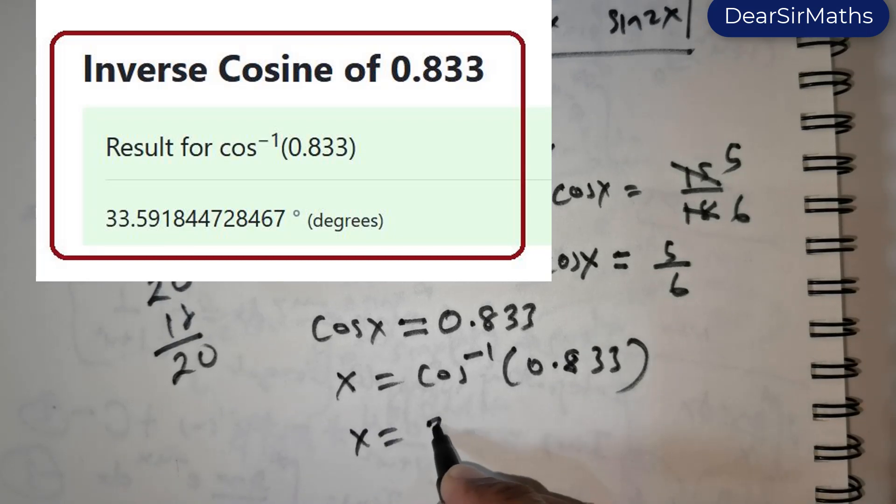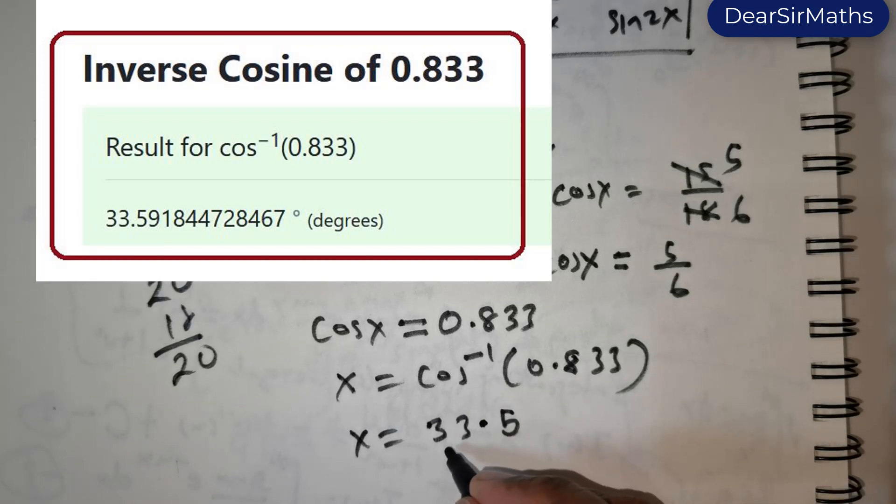I will show you that value also. It is approximately—I am going to take it as 33.6. That is the value of x. So I have got the value of x.